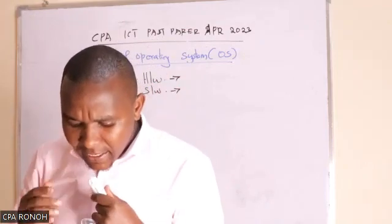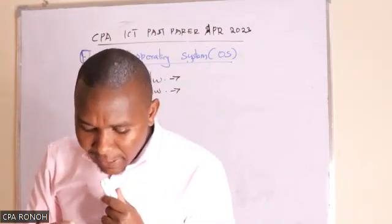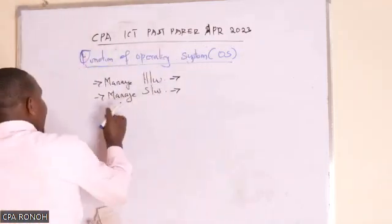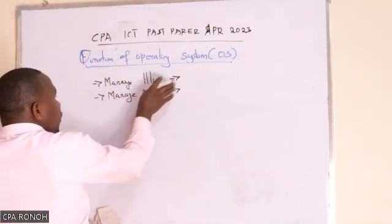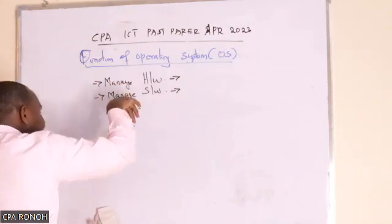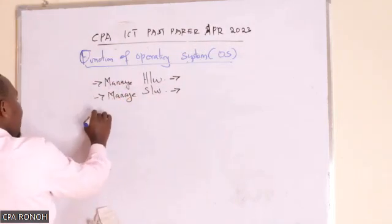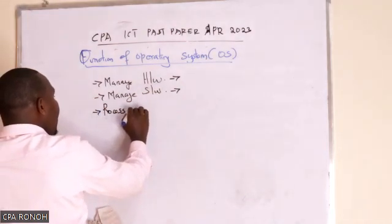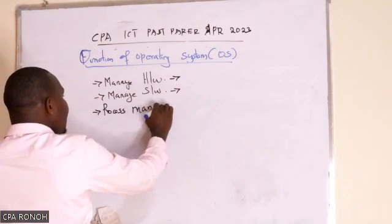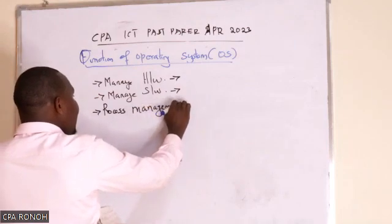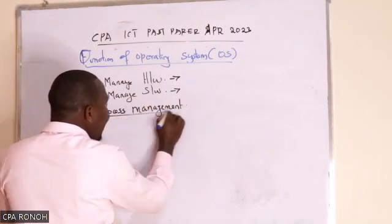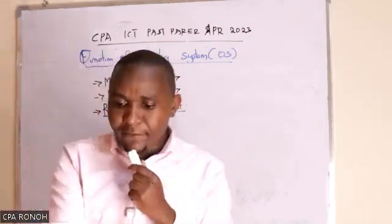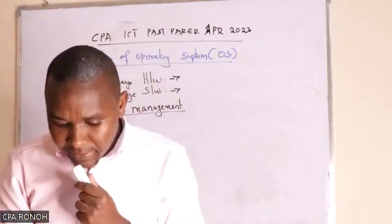They have asked us specifically about process management — they extracted that function of the OS. Another function of the OS is process management. The examiner is asking us a question from the functions of the OS, so the first activity they can execute in relation to process management is process creation.